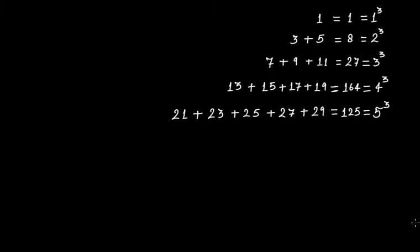This is part one of the video series on patterns of cube numbers. The pattern starts from the first natural number, one. One cubed is equal to one. Then two cubed is equal to eight, which equals five plus three.